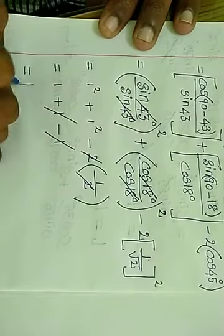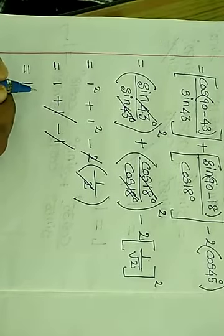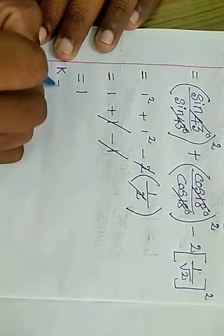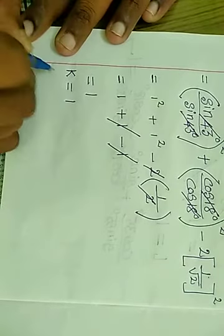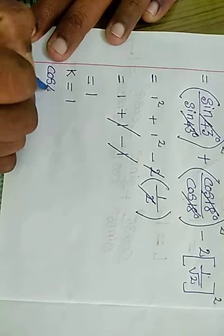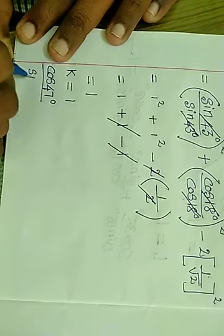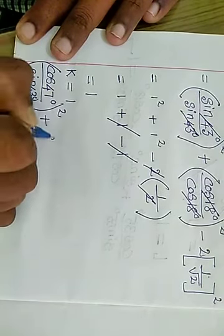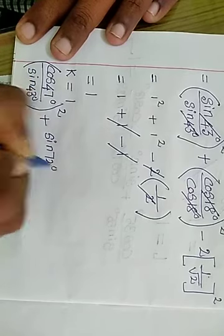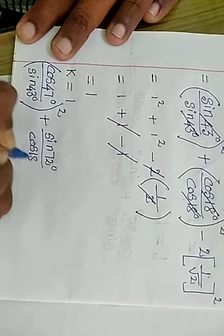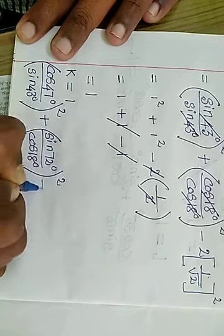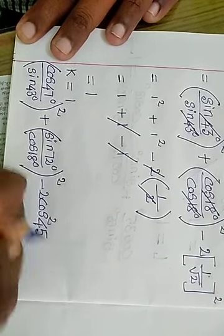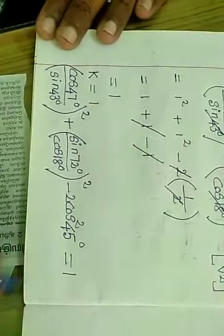We get 1 square plus 1 square minus 2 times (1/√2)², which is 2 times 1/2 = 1. So 1 plus 1 minus 1 equals 1. The given question value is equal to 1. So cos 47°/sin 43° whole square + sin 72°/cos 18° whole square minus 2 cos square 45° = 1. Finished, completed.